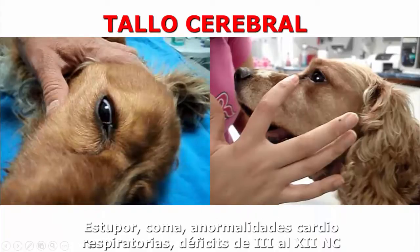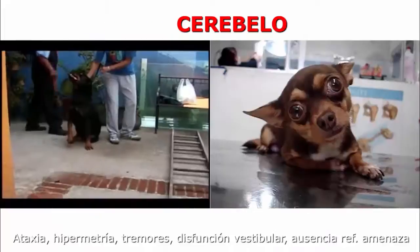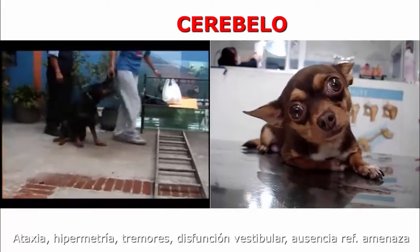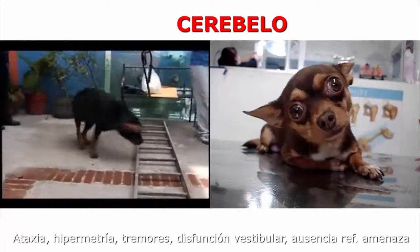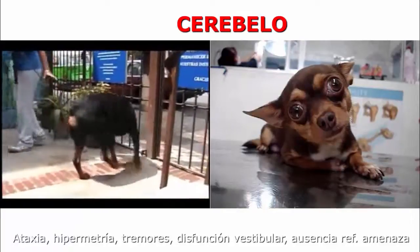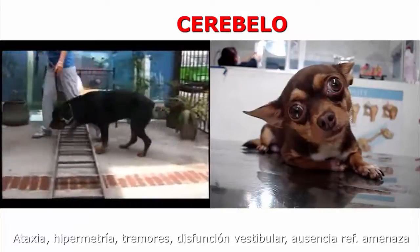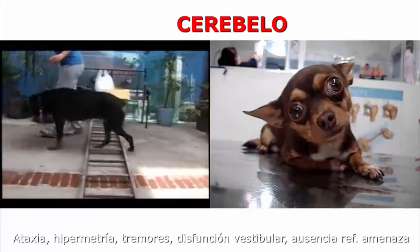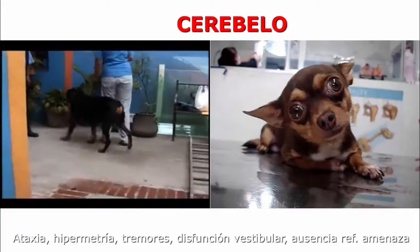También hay anormalidades cardiorrespiratorias, pues ahí se encuentra el centro cardiorrespiratorio y el neumotáxico. Y también lesiones puras de los nervios craneales. El cerebelo, que se dice que es un pequeño cerebro, tiene como función mantener una coordinación tanto en posición como en movimiento.